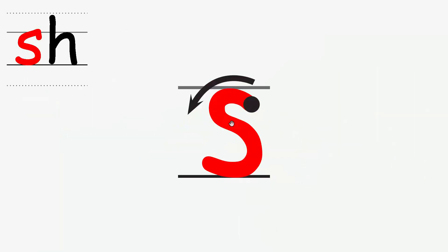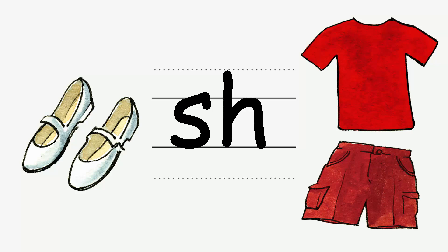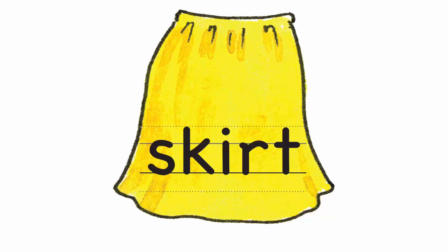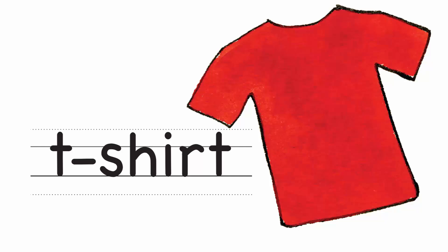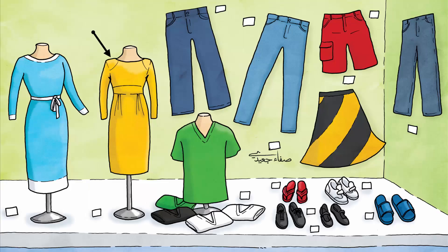The name is S. The name is H. The sound is Sh. A skirt. A t-shirt. A dress. A yellow dress. A green t-shirt. A black and yellow skirt. A shirt.